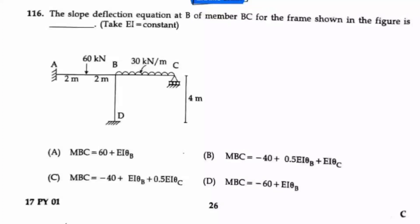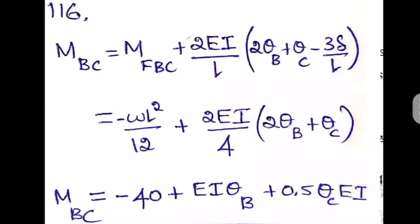Question number 116: Find the slope deflection equation at B of member BC for the frame shown, with EI = constant. The BC member length is 4 meters (from the figure) with UDL throughout. The slope deflection equation is: Mbc = Mf_bc + (2EI/L)(2θb + θc − 3Δ/L). Since no deflection value is given, Δ = 0.